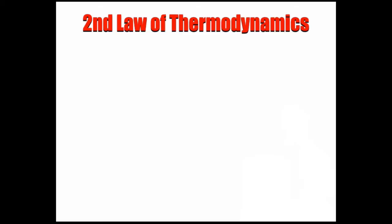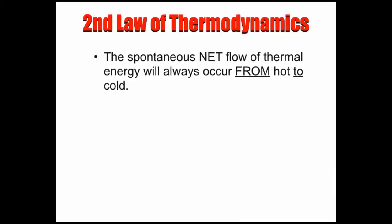So these all function because they all need the second law of thermodynamics. The second law of thermodynamics says the spontaneous net flow of thermal energy will always occur from hot to cold. In other words, energy will always flow from a high source to a low source. To put it another way, a ball will always roll downhill. That's really what the second law of thermodynamics is saying.